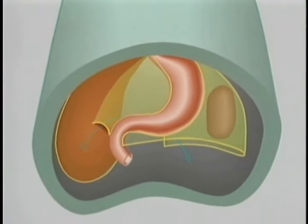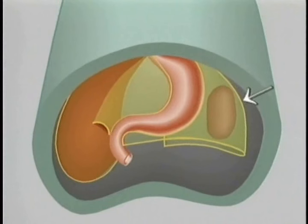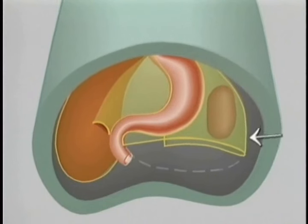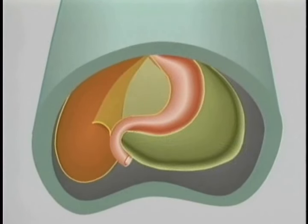The dorsal mesogastrium is shown as though it had a free lower border along here. But in reality, this fold is continued all the way around to here, creating a sac that has only one opening here.